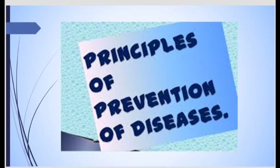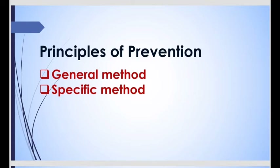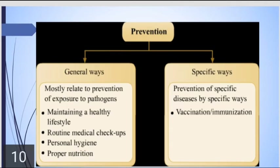Principles of prevention of diseases. There are two steps: the general method and the specific method. General ways mostly relate to prevention of exposure to pathogens by maintaining a healthy lifestyle, routine medical checkups, personal hygiene, and proper nutrition. Specific ways involve prevention of specific diseases by specific means like vaccination or immunization.